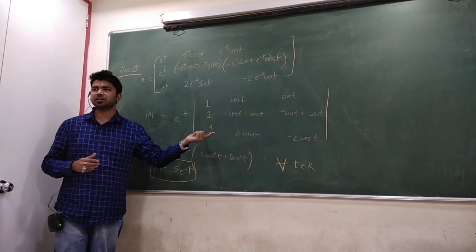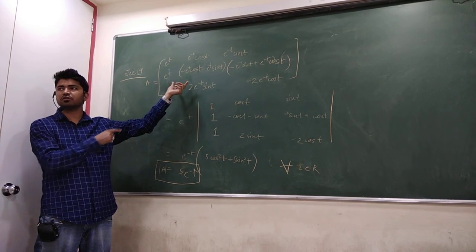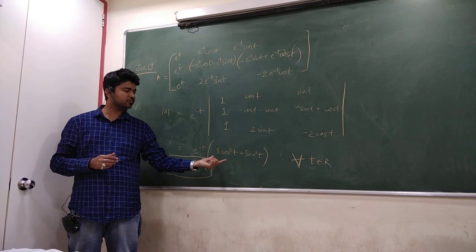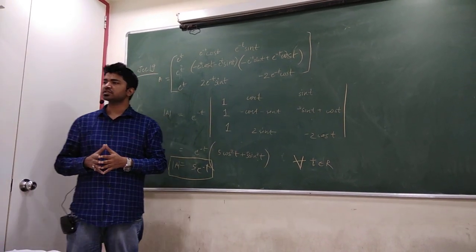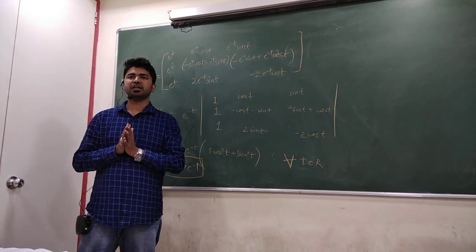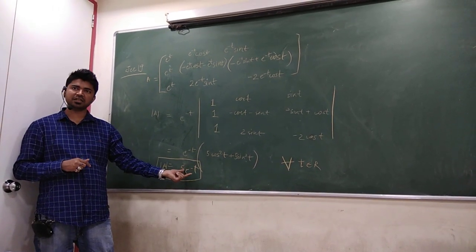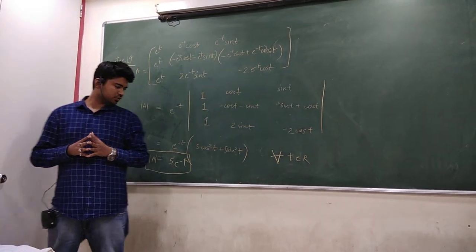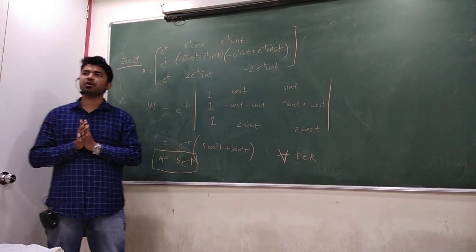If you solve this determinant, this becomes very easy in order to, in a way to solve the previous determinant. Once you solve this determinant, you are getting 5 cos square t plus 5 sin square t, which reduces into a very simplified expression, which we all have studied earlier, which finally reduces to 5 into e ki power minus t, in which cos square t plus sin square t becomes 1.